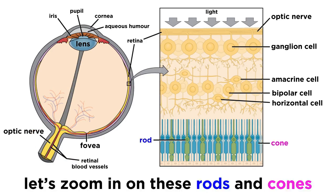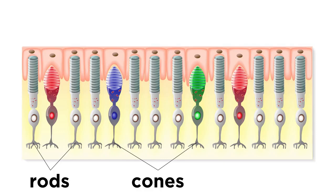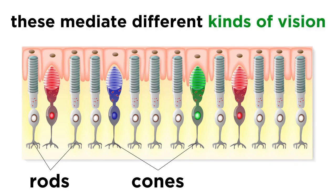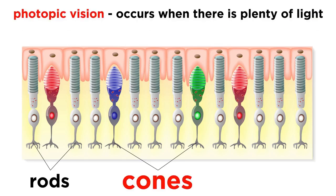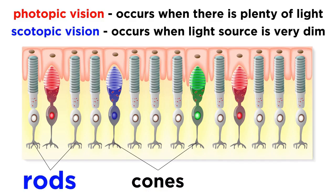Let's now get a closer look at these rods and cones. Looking at their shapes, the origin of their names becomes quite obvious. They mediate different kinds of vision. Photopic vision is what happens when there is plenty of light, which allows us to perceive our surroundings in great detail — this is mediated by cones. Scotopic vision is what happens when things are very dim and there is not enough light to excite the cones; this is mediated by rods, and it produces a kind of perception that lacks certain details.